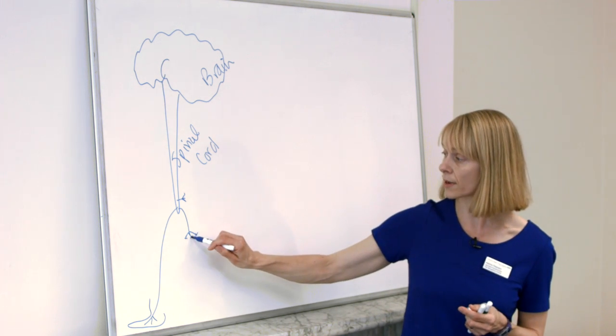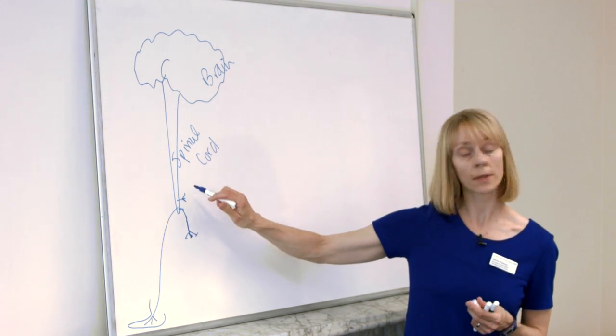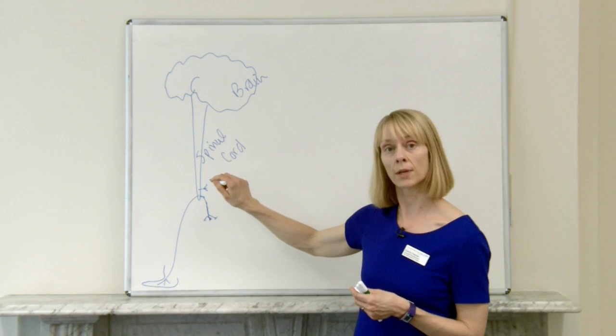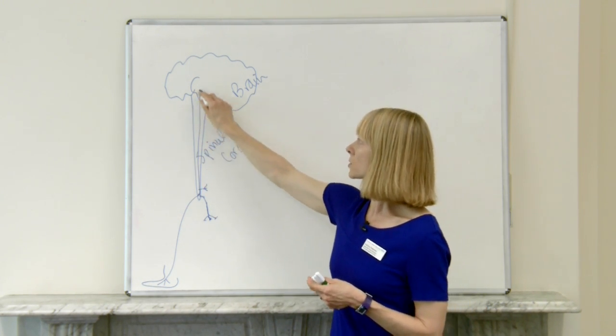Now, these little nerve endings are capable of transmitting messages into the spinal cord where they synapse, and I'll explain what a synapse is, with a central nerve that passes the message onto the brain.